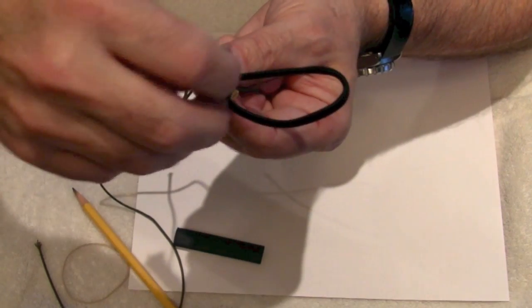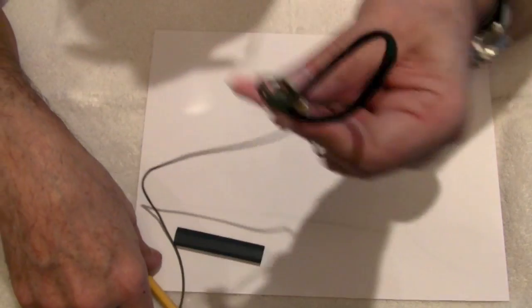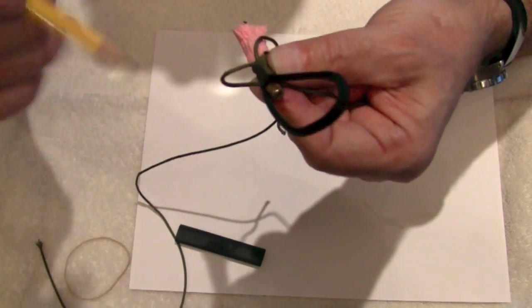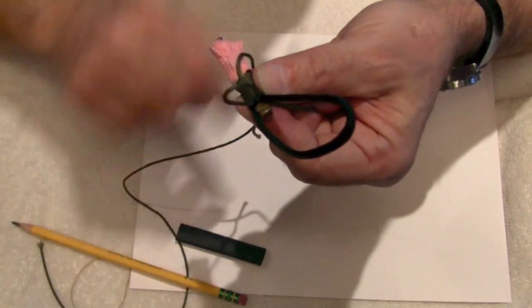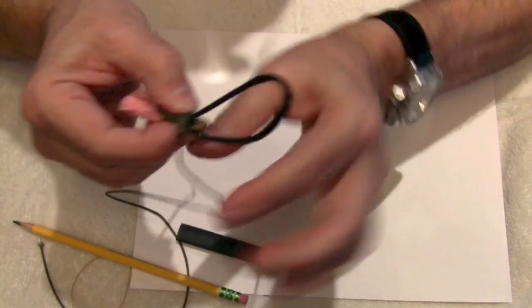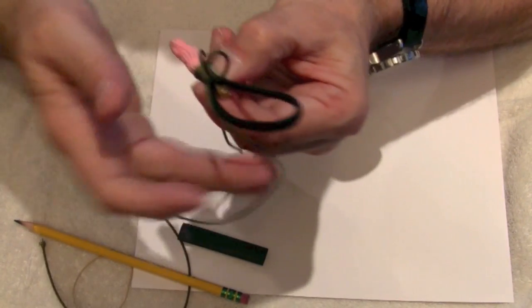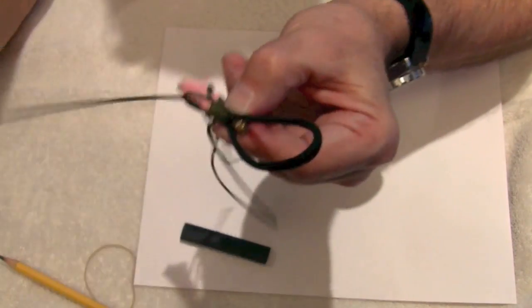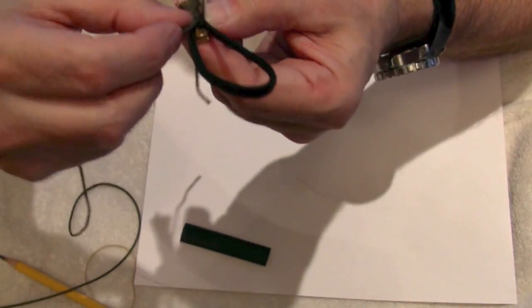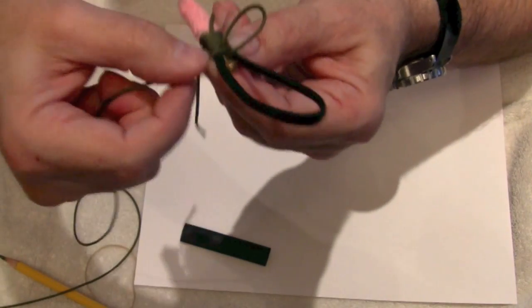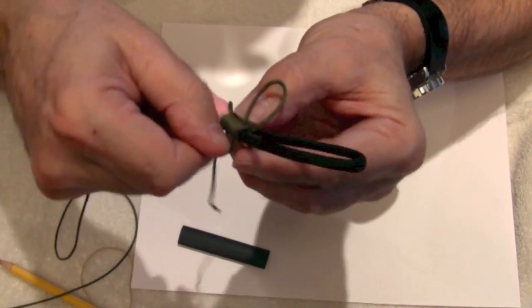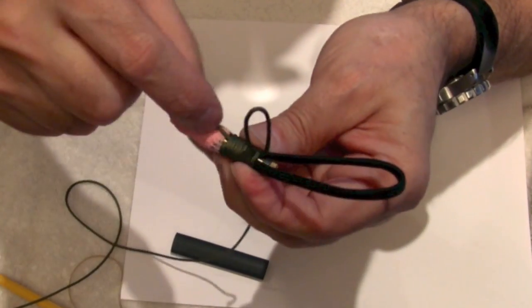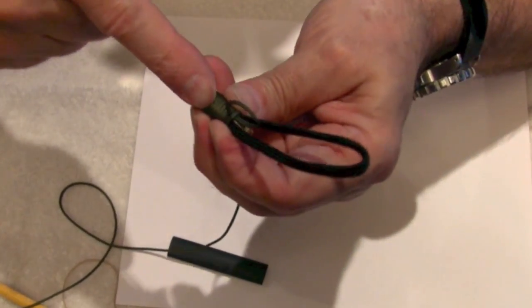We're going to pull the loop up. See if I can get it in focus there. Okay, so I've got the loop up and what I'm going to do now is take the end and thread it through that loop, set it down in the base of the loop.